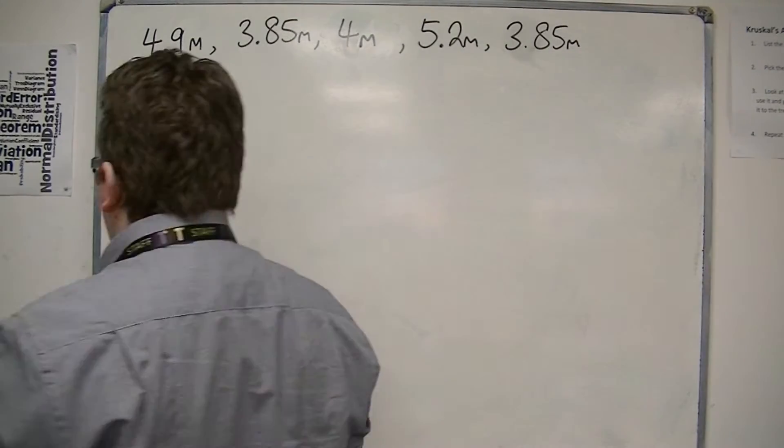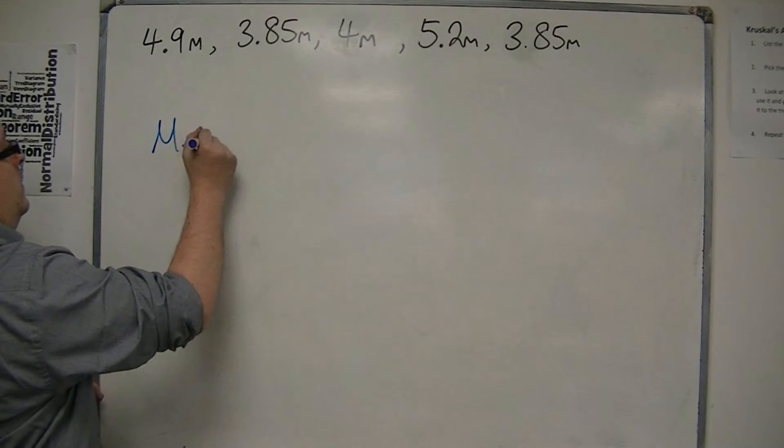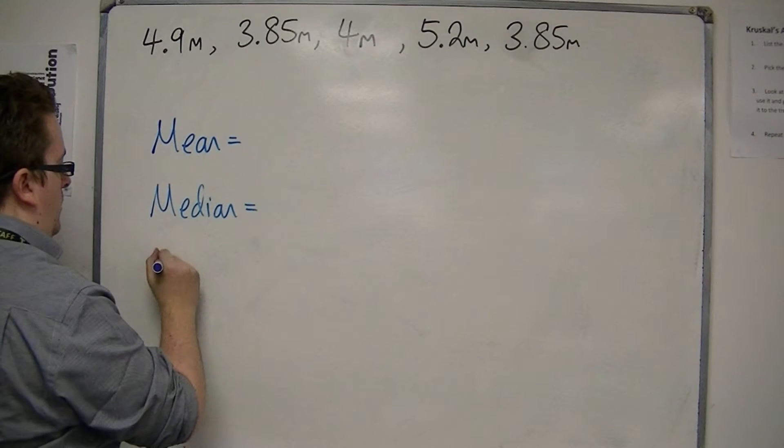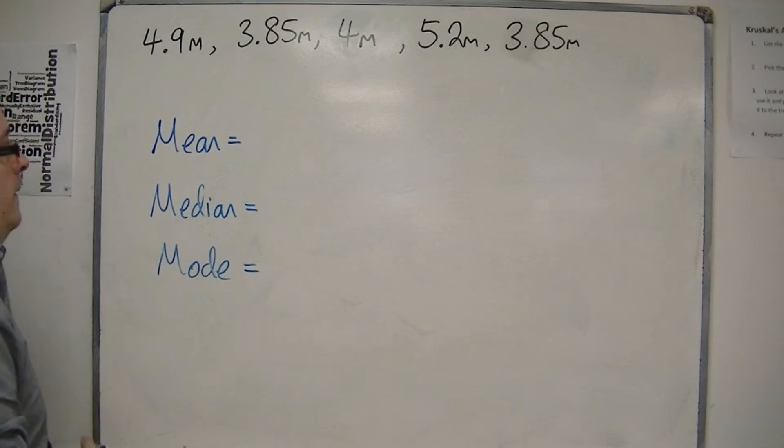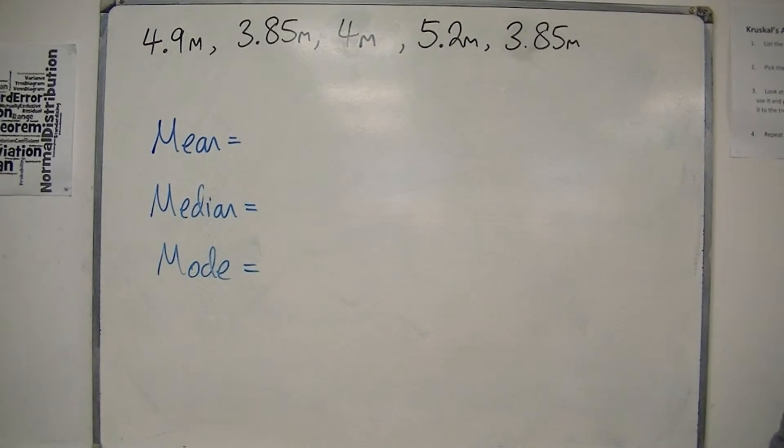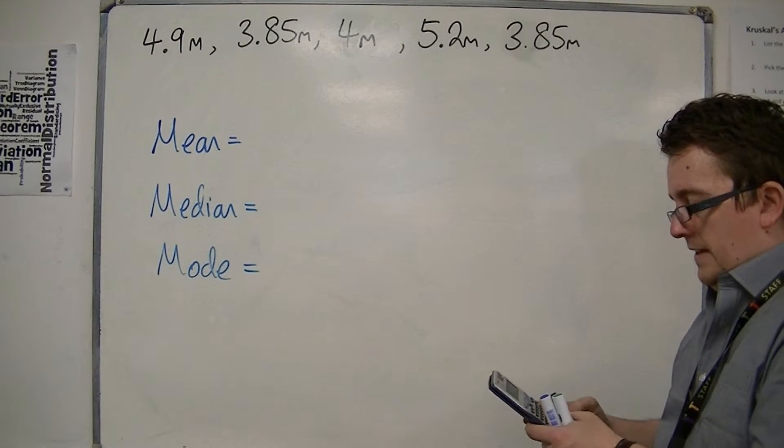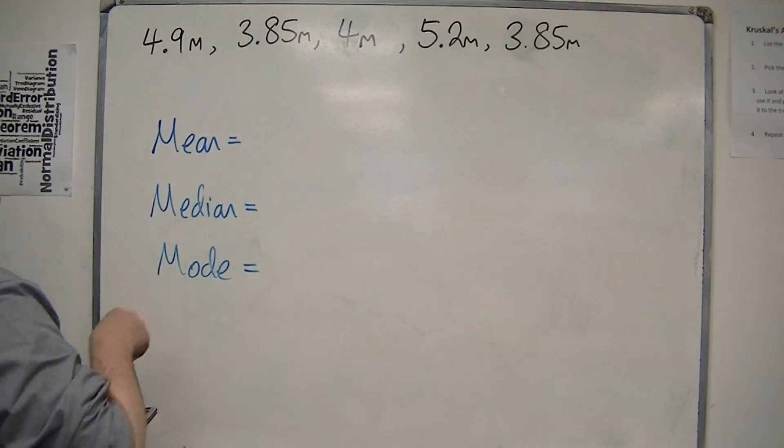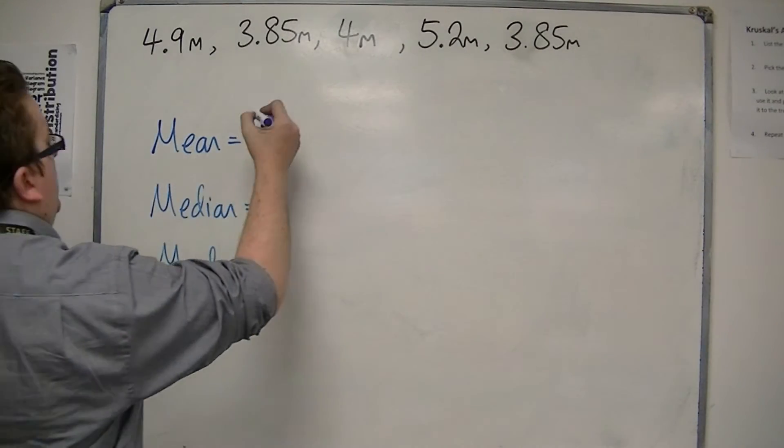So we're going to look at the mean, median, and mode. So first of all, the mean. We're going to add them all together: 4.9 plus 3.85 plus 4 plus 5.2 plus 3.85, and I'm going to divide that by 5. So that's 4.36. So that's our mean.